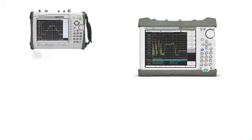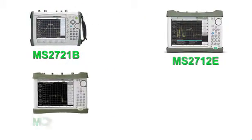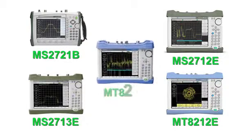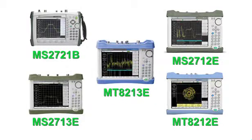Anritsu's digital television SFN measurement options for its range of handheld analyzers allow for accurate and efficient transmitter installation and adjustment, helping to significantly reduce network rollout times.